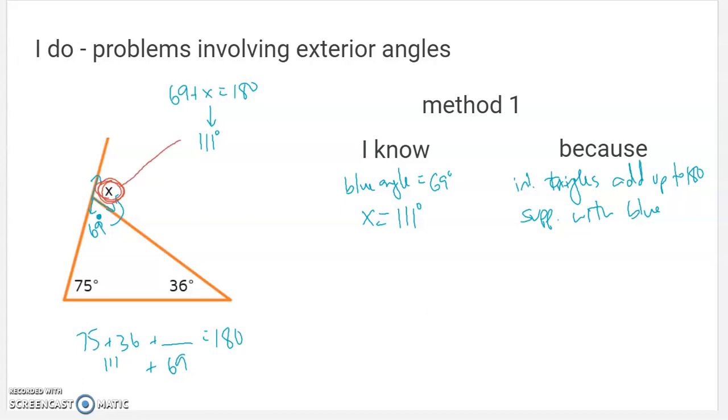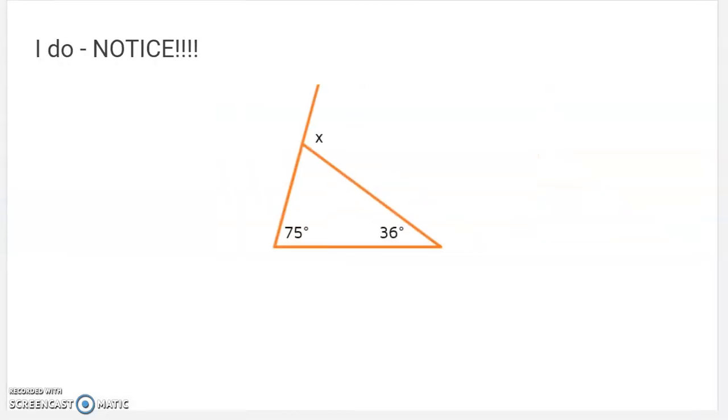This angle ended up being 111 degrees. But back in my original problem, I also had a 111 degree number come up. Check it. So when I added these two numbers up, they ended up being 111. And then when I found the missing angle, it also ended up being 111. So this way of finding this angle was very clear. But I want to show you something new. Notice that this angle we just found, this is the exact same problem. This angle ended up being 111 degrees. And these two angles, the ones separate from it in the triangle, they also added up to 111 degrees.